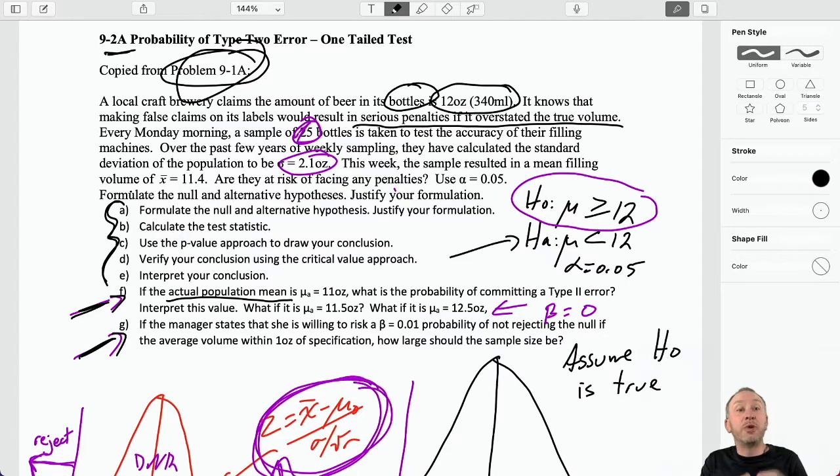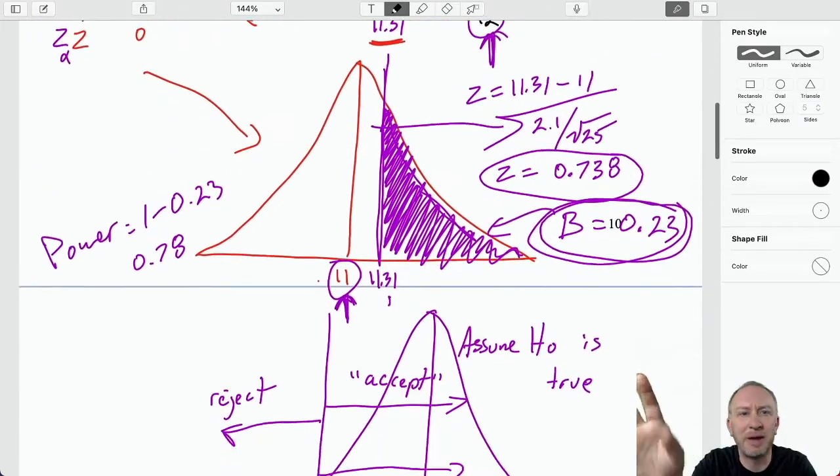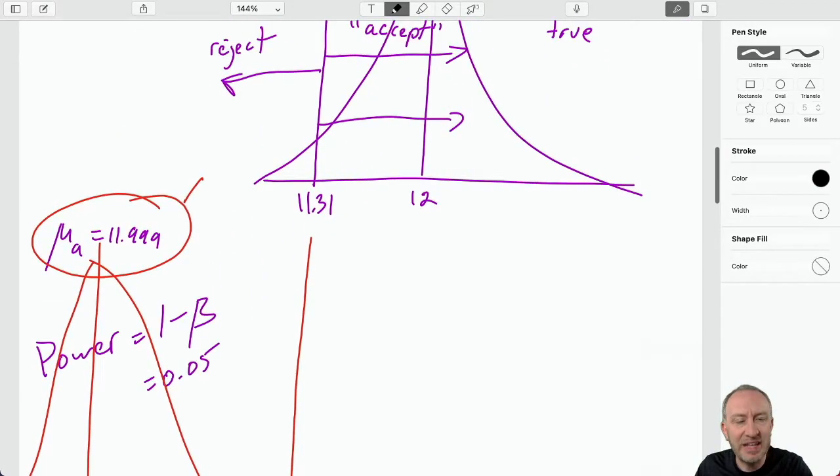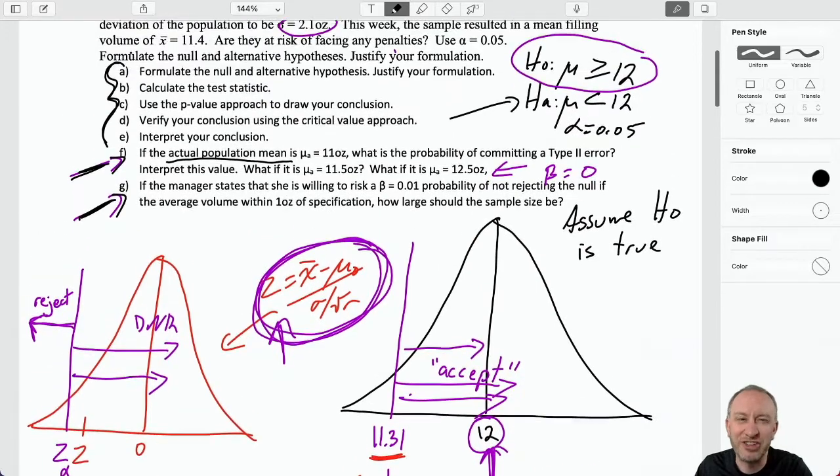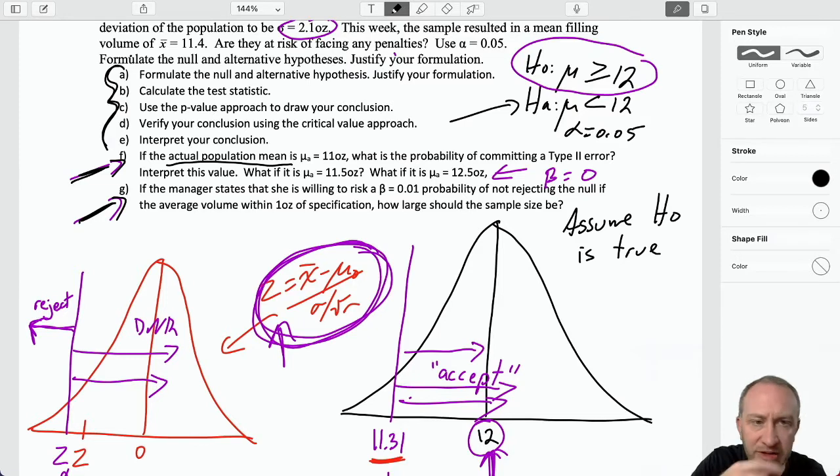So if the alternative is true and very true, meaning the actual population mean in this case is way less than 12, it's really unlikely that we'll commit a type 2 error. The power of the test is much larger than if we look at a situation where the alternative is true, but only just barely true. And so we had gone through, and here's my mess from the previous video, and we saw that if the alternative is true, but just barely true, it's really difficult to correctly reject, and really difficult to identify that it's actually true.